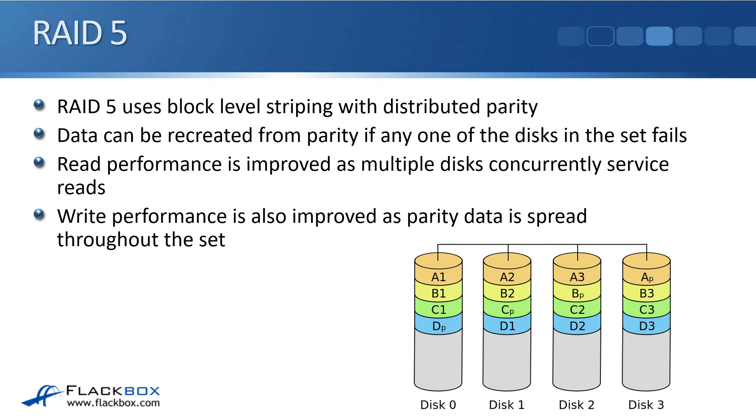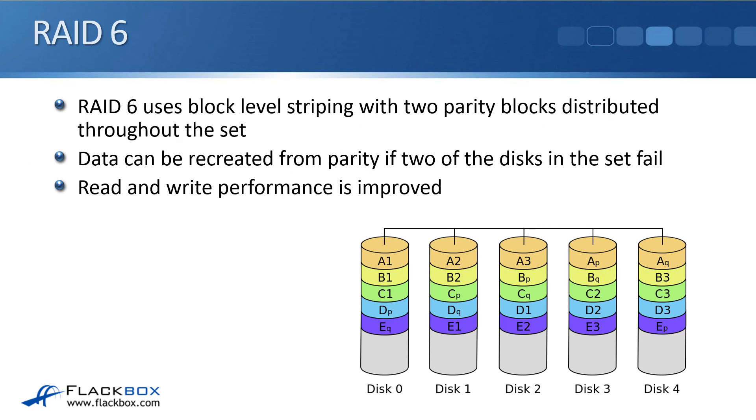So that was RAID 4. Next one is RAID 5, which is quite similar. RAID 5 uses block-level striping, but with distributed parity. Data can be recreated from parity if any one of the disks in the set fails. The same as with RAID 4. Read performance is improved as multiple disks concurrently service reads. The same with RAID 4, where it's better than RAID 4, is write performance is also improved as parity data is spread throughout the set rather than just being to one disk. So we're writing it to multiple disks there. We're going to get the better performance. So that is RAID 5.